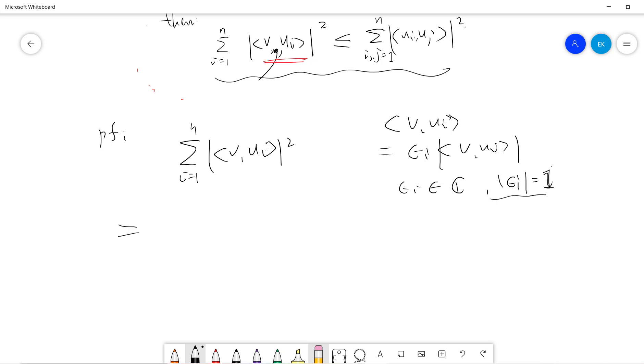So this term can be written as epsilon i and the V Ui, i from 1 to n. So it's basically V, i from 1 to n, Ui epsilon i. So this is a linear combination of epsilon vector.